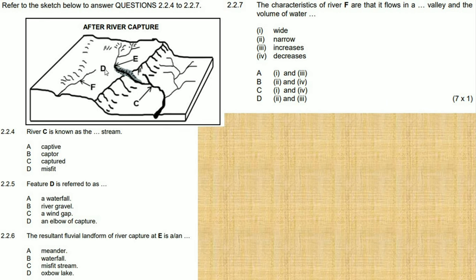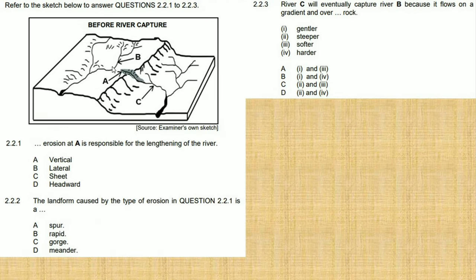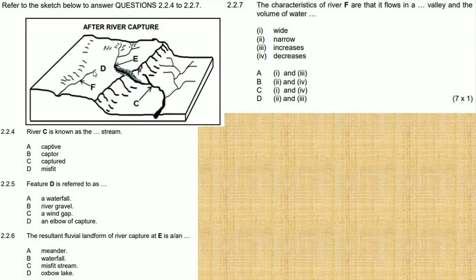We said it's a gap. As you can see, because it was flowing over here, we no longer have this over here, meaning it's a wind gap over there because of this gap that we have over here. So 2.2.5, feature D will be a wind gap.